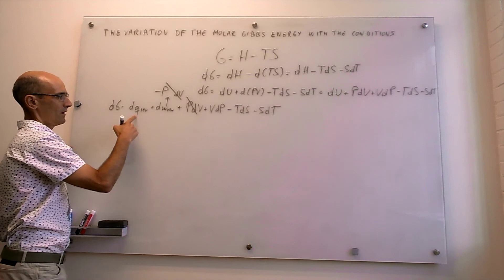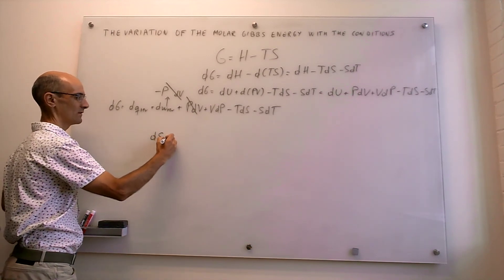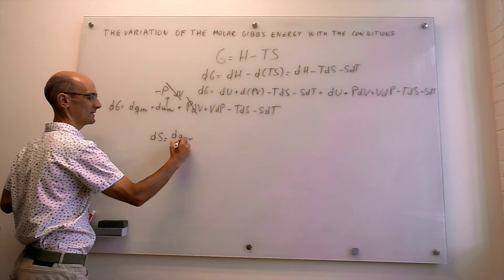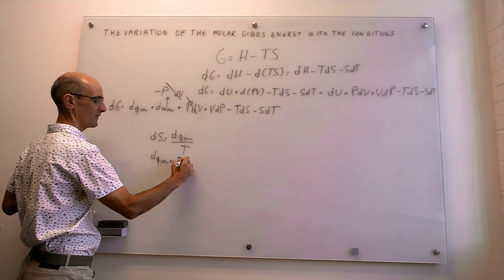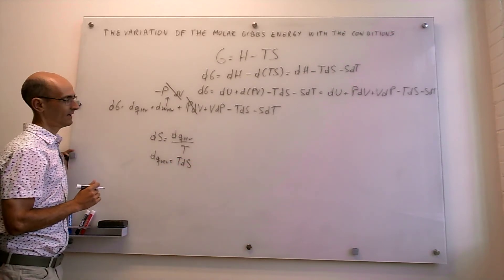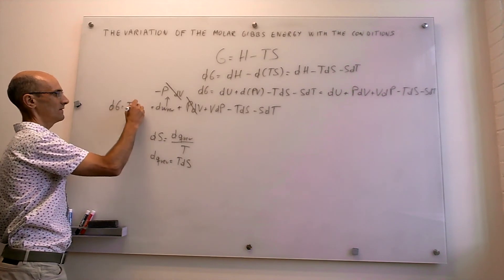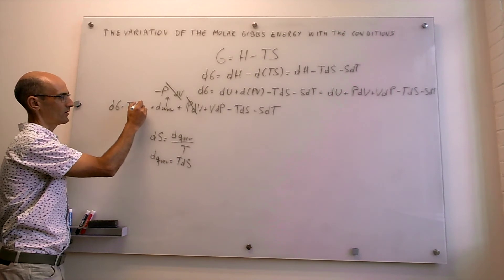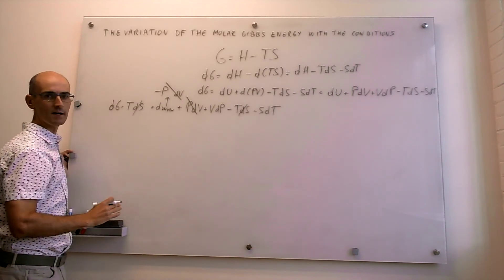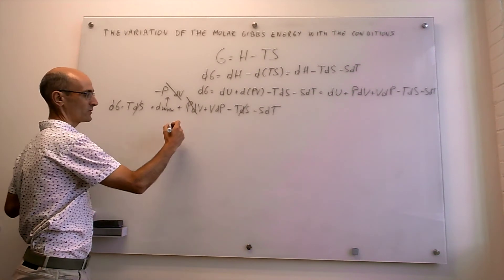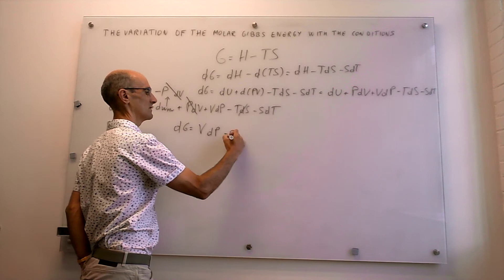For dQ_rev, we invoke the thermodynamic definition of entropy: dS = dQ_rev / T, which gives dQ_rev = T·dS. Substituting this, T·dS cancels with the −T·dS term. After all these cancellations, only two terms survive: the change in Gibbs energy equals V·dP − S·dT.